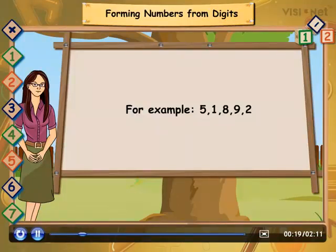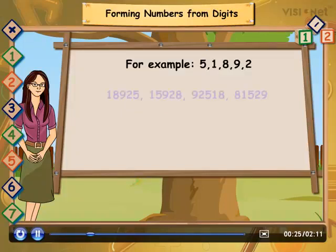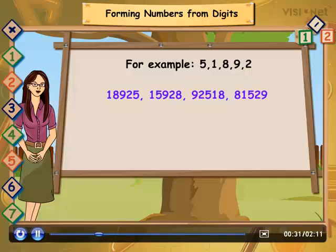This consists of 5 digits. By these numbers we can form many numbers as shown. 18925, 15928, 92518, 81529. One more thing, these are not only numbers formed by these 5 digits.